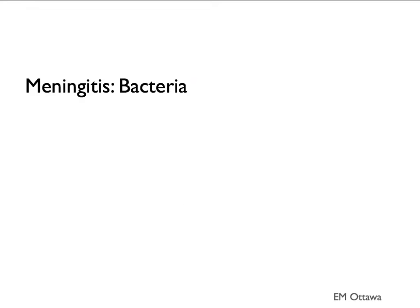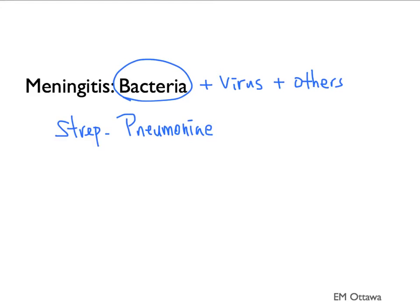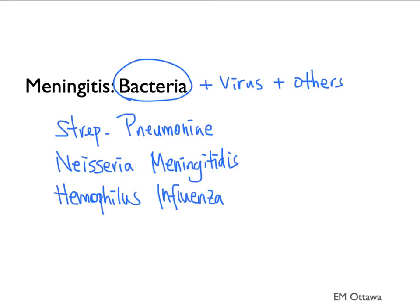We'll talk about the pathophysiology of these two diseases. Meningitis can be caused by bacteria, viral, and other causes. The main one we need to concern ourselves with is bacterial meningitis. Organisms enter the meninges through the bloodstream from other parts of the body. The main bacteria include Strep pneumoniae, Neisseria meningitidis, and Haemophilus influenzae — all part of the normal flora in the upper respiratory tract.